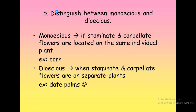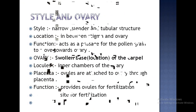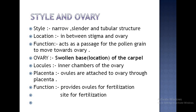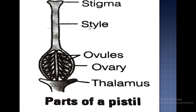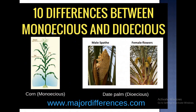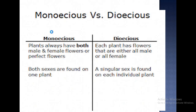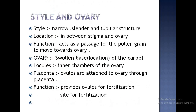The next part of the carpel is the style. The style is a narrow, slender, tubular structure. The location of the style is in between the stigma and the ovary. The function of the style is that it acts as a passage for the pollen to move towards the ovary.